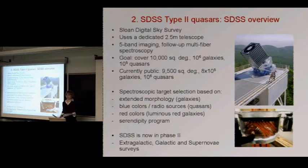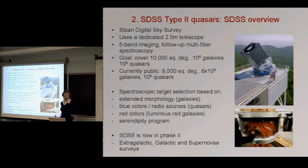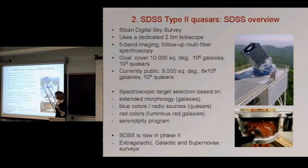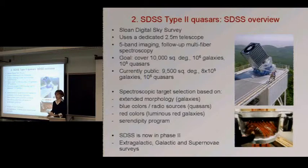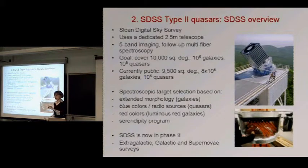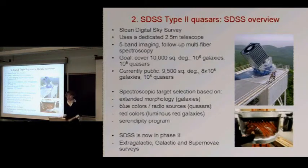Now I'm going to describe how we found type 2 quasars in the Sloan Digital Sky Survey data, starting with a quick overview of the survey. The Sloan Digital Sky Survey uses a dedicated 2.5-meter telescope at Apache Point Observatory. They do five-band imaging and then follow-up multi-fiber spectroscopy. An automated pipeline selects objects for follow-up spectroscopy based on predefined criteria, which turns out to be important for us later on.